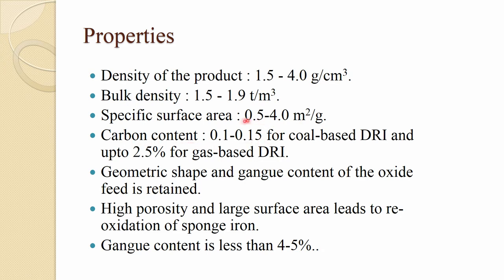Carbon content usually ranges between 0.1 and 0.15 percent for coal-based DRI, and up to 2.5 percent for gas-based DRI. The percentage of carbon is quite low, and so the melting point becomes quite high. Geometric shape and gang content of the oxide phase is retained because there is no slag formation in DRI.